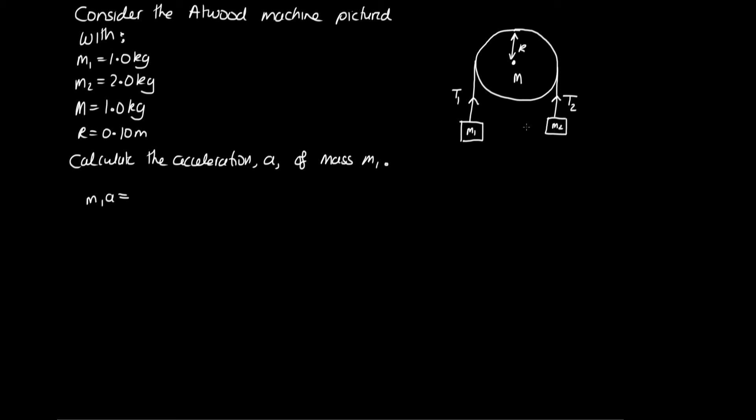Now because m₂ is heavier than m₁, we can safely assume that it is going to accelerate this way. So we can say the tension force is pulling it up and then we've got the weight force pulling it down. Those are the only two forces acting on this mass. On mass m₂, we've got the weight of m₂ pulling it down and the tension pulling it up. So we've got m₂g minus T₂.